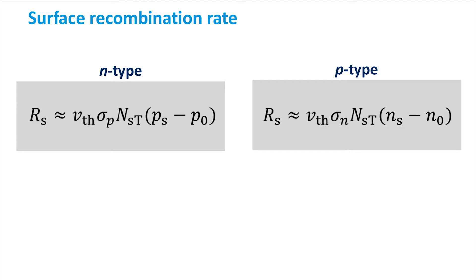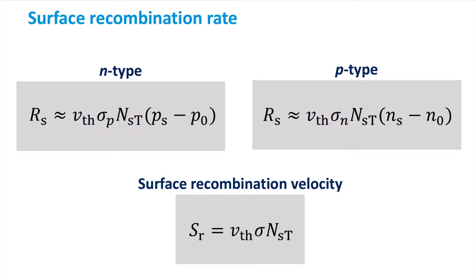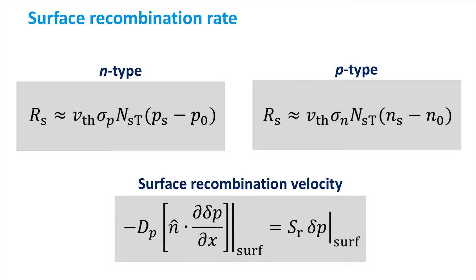For a p-type semiconductor, the recombination rate is expressed similarly — we only replace the symbols P for holes with N for electrons. Note that the product of the thermal velocity, the capture cross-section, and the trap density has the unit of velocity; this quantity is therefore called the surface recombination velocity. Since the surface recombination rate is linearly proportional to the surface recombination velocity, a low recombination velocity results in a low recombination rate, while a high recombination velocity results in a high recombination rate. The effect of the surface recombination velocity on the carrier density can be seen better with the following equation, which states that the spatial rate of change of the carrier concentration perpendicular to the surface is related to the surface recombination velocity.